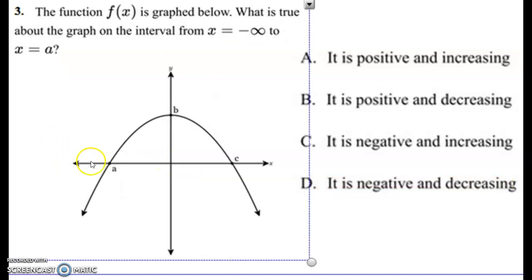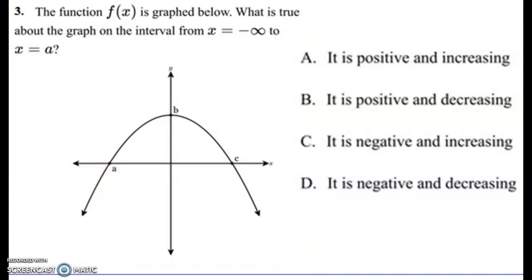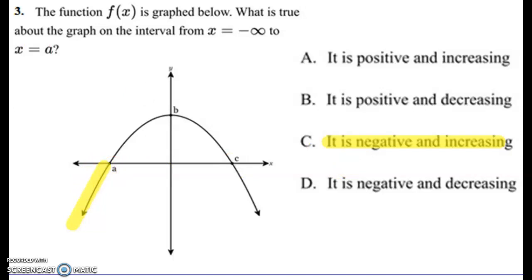Here's an example involving infinity. It says x equals negative infinity to x equals A — going from negative infinity all the way up to A. That interval stops here, it's in the bottom, so it's negative. But this one is going up from left to right, so it's increasing. The answer is C: negative and increasing.